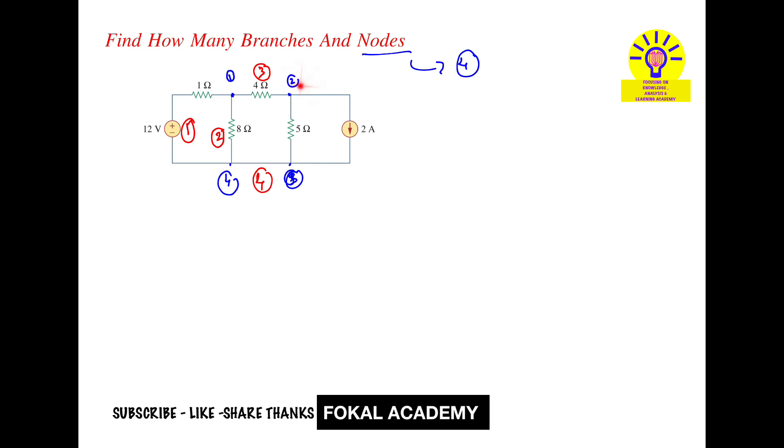Next, two to three, this is another branch. Let's consider it is the fifth branch. Next, two to three, this is another branch. There is no current division here. So it is the sixth branch. So totally six branches are there.